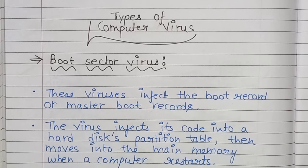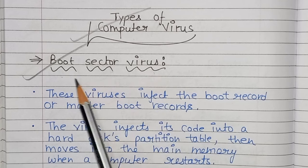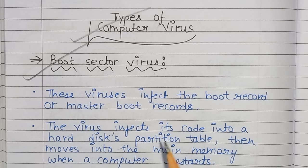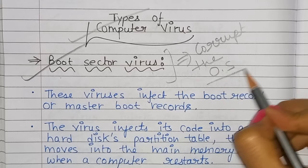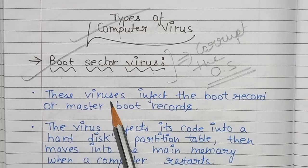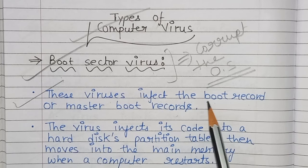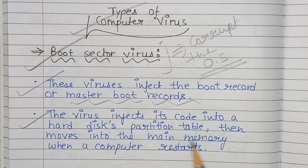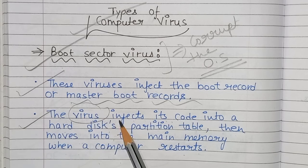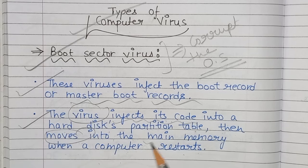First is boot sector virus. The boot sector virus corrupts the operating system. This virus infects the boot record and master boot records. The virus injects its code into a hard disk partition table, then moves into the main memory when a computer restarts.